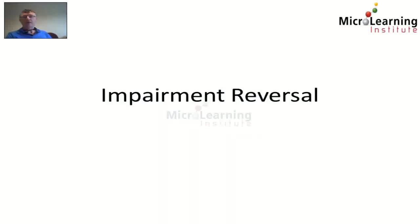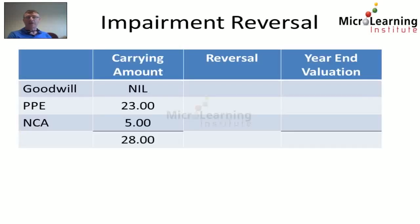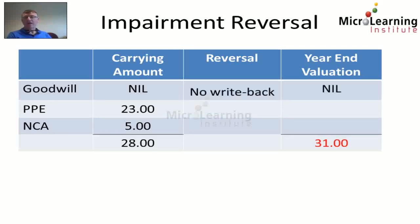Next, we're told there is a reversal of the impairment. At year end, the carrying amount of the cash generating unit was 28 million, but management determined it can now be reassessed at 31 million dollars. Considering how IAS 36 allows reversal, firstly IAS 36 specifically prevents the write-back of any goodwill, so we cannot restore any of that 10 million dollars of goodwill that existed prior to impairment.